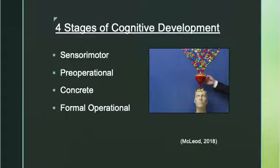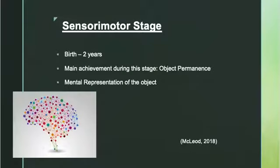The four stages of cognitive development start with sensorimotor, pre-operational, concrete, and formal operation. The sensorimotor stage develops from birth to two years. The main achievement during this stage is object permanence — knowing that an object still exists even if it is hidden. It requires the ability to form a mental representation of the object.